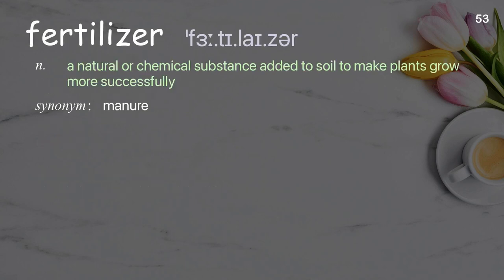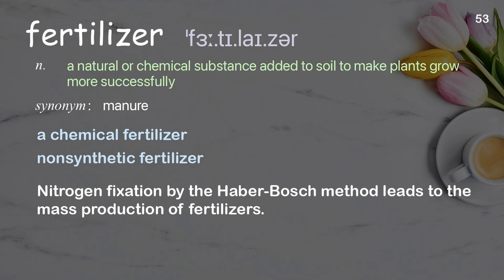Fertilizer: a natural or chemical substance added to soil to make plants grow more successfully. Examples: a chemical fertilizer, non-synthetic fertilizer. Nitrogen fixation by the Haber-Bosch method leads to the mass production of fertilizers.